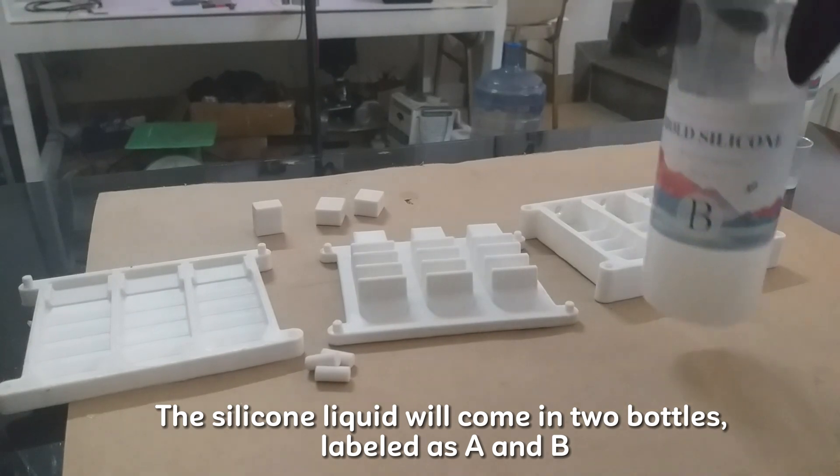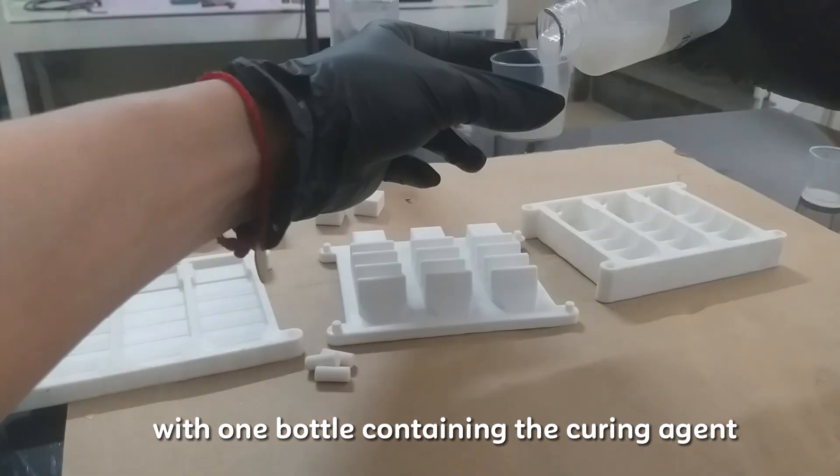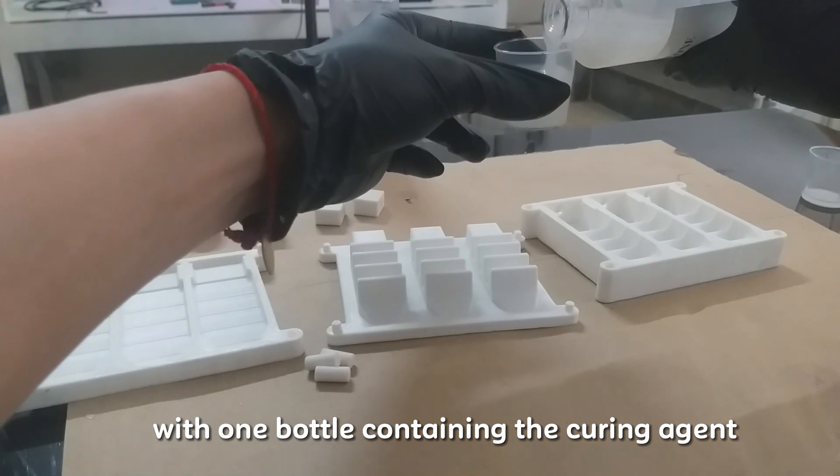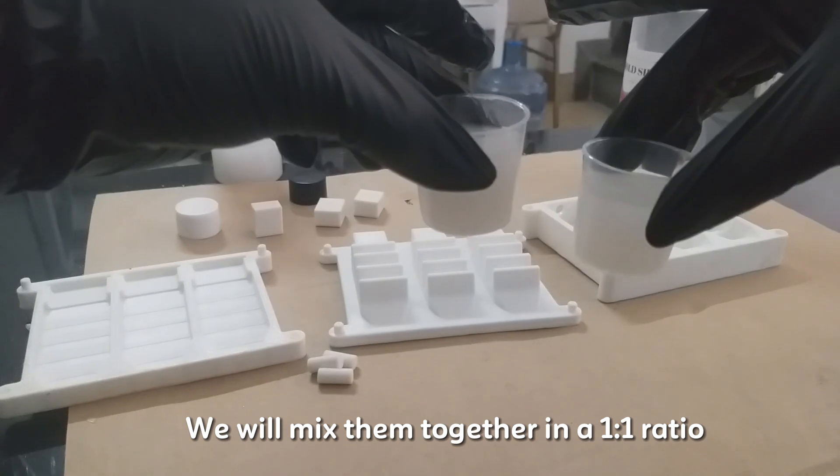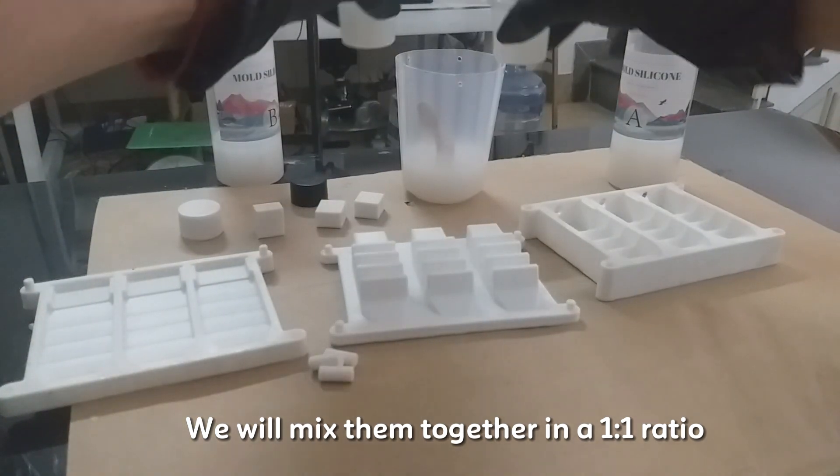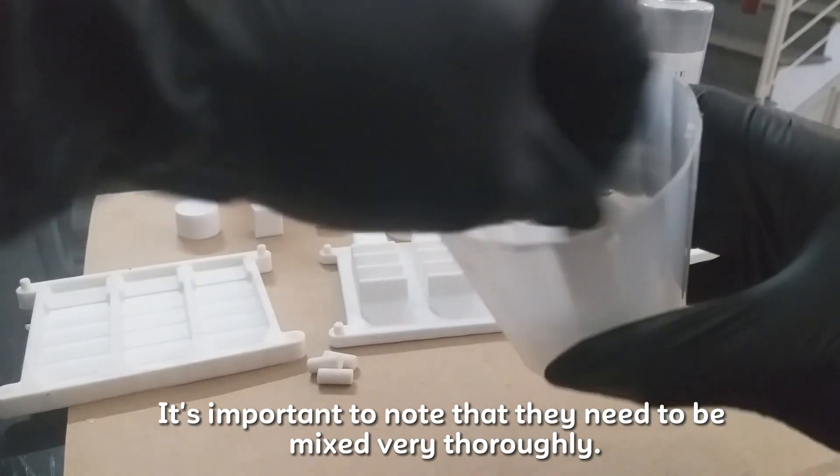The silicone liquid will come in two bottles, labeled as A and B, with one bottle containing the curing agent. We will mix them together in a 1 to 1 ratio. It's important to note that they need to be mixed very thoroughly.